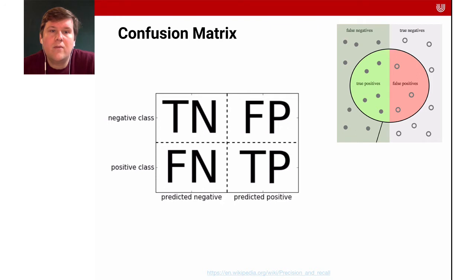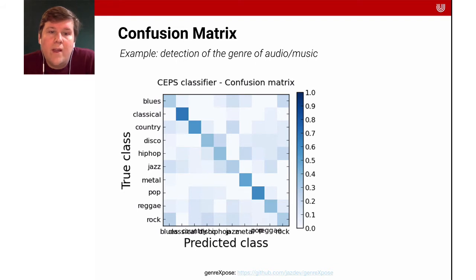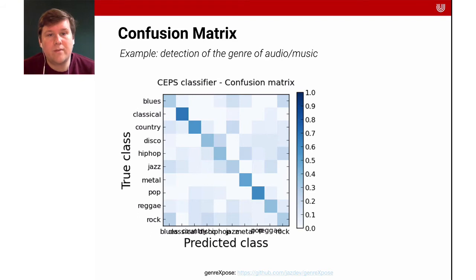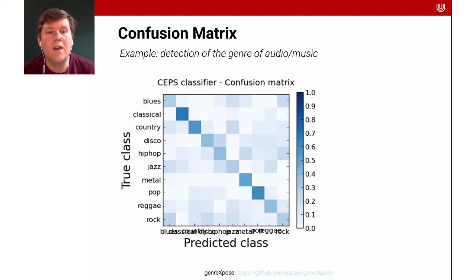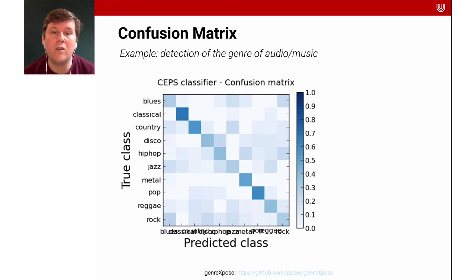Consider the confusion matrix: true negatives, true positives, false positives, and false negatives. Here's an example of a system that predicts the genre of music. You can see there are a lot of true positives — the system is working well. But the confusion matrix also shows which things are mistaken for which: disco and hip-hop are quite often confused, and there's some ambiguity between hip-hop and jazz. This can lead to changing your modeling assumptions — for instance, combining metal and rock into one class.